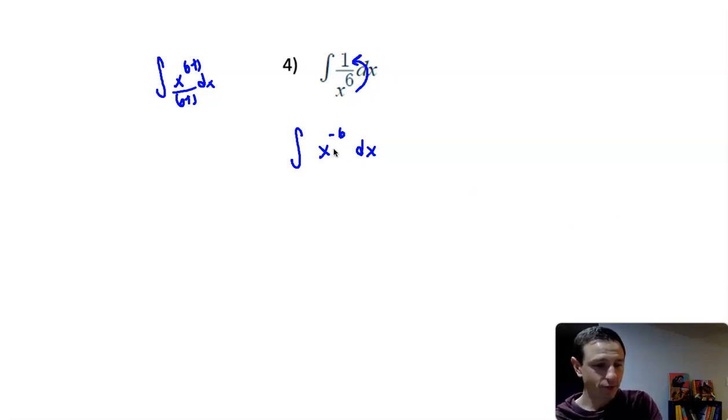Now, even though it's negative, we could still use the power rule. So, I'm going to add 1 to the exponent, negative 6 plus 1. Again, I'm going to divide by negative 6 plus 1.